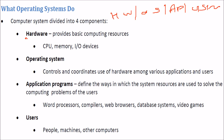Hardware is pure electronics — it provides the basic computing resources like CPU, memory, and input/output devices. The operating system is the most important part after hardware. It controls and coordinates the use of hardware across various applications and users, handling coordination, control, and efficient use of the hardware.